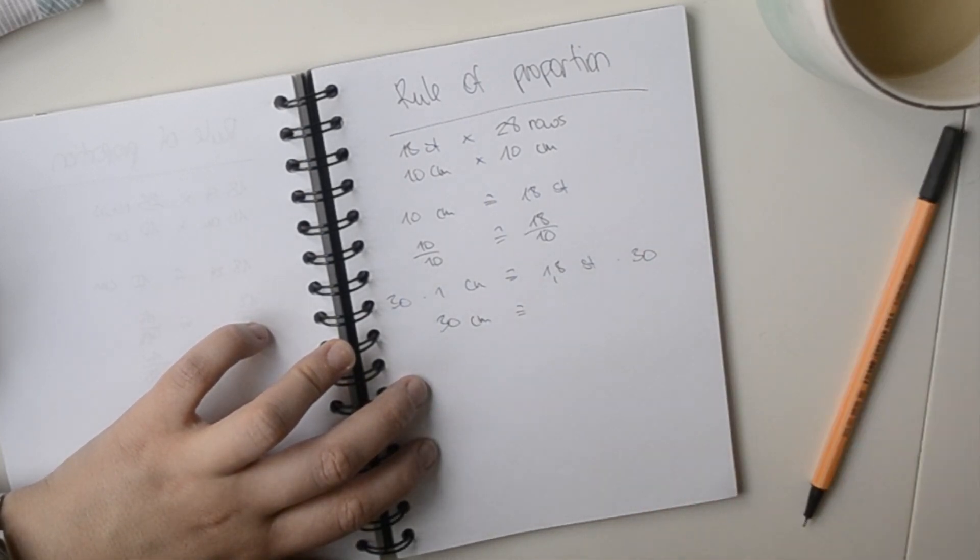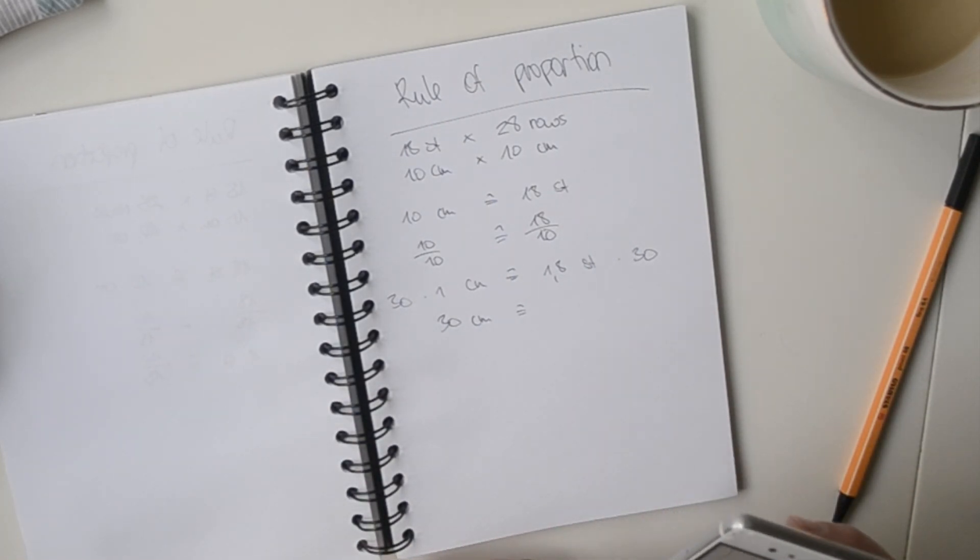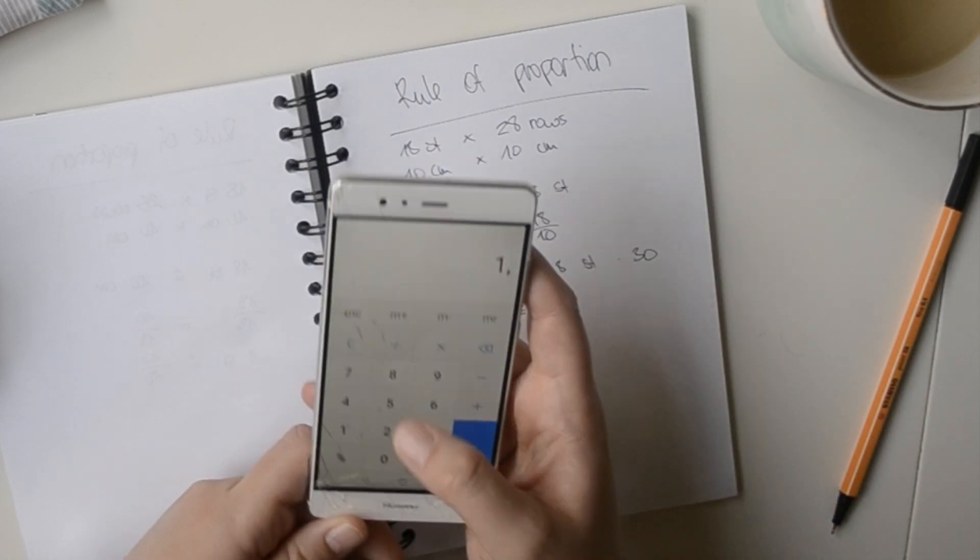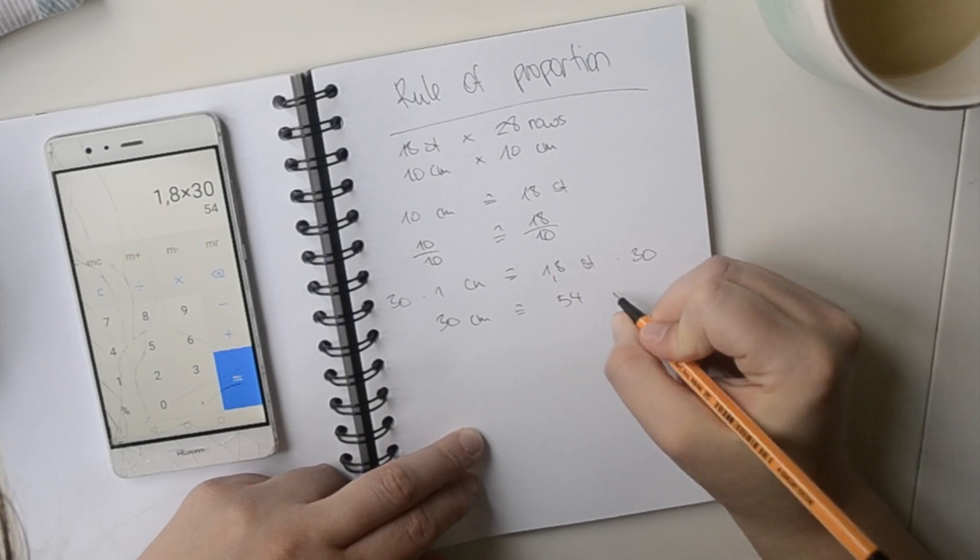And now I know that 30 cm is equal to 55 stitches.